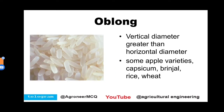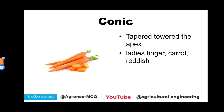In oblong shape, the vertical diameter is greater than the horizontal diameter. In the case of rice, we can see the vertical diameter is greater than the horizontal diameter. Examples of oblong shape are some apple varieties, capsicum, brinjal, rice, and wheat.